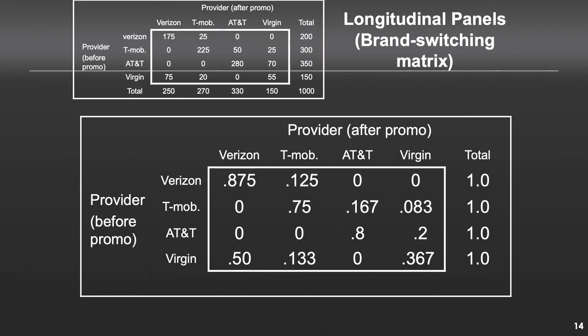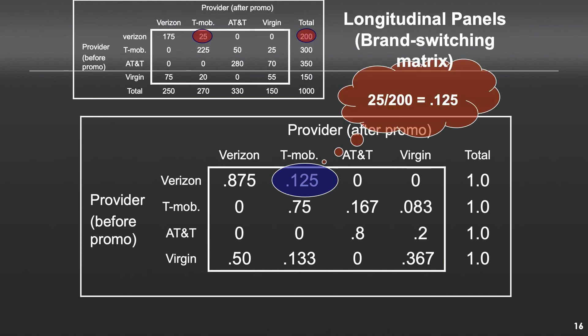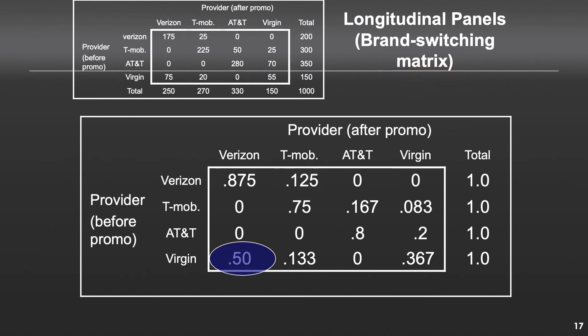One really useful way to look at this is to convert it into percentages, which tells you the degree of loyalty that exists. For example, the value 0.125 or 12.5% is computed by taking 25 and dividing it by the total number of original Verizon customers (200). That means 12.5% of Verizon customers switched to T-Mobile. Another example: 75 people divided by 150 original Verizon customers gets us to 50%.